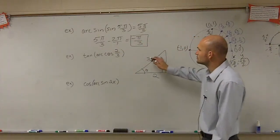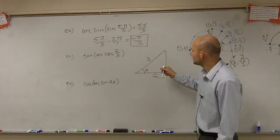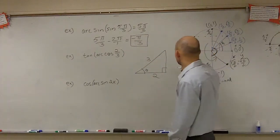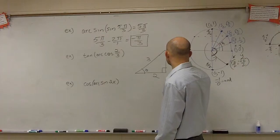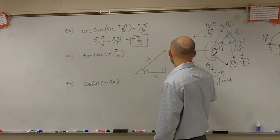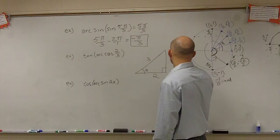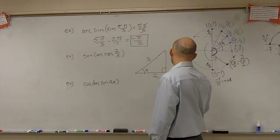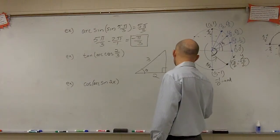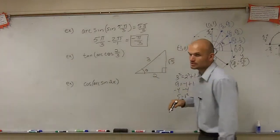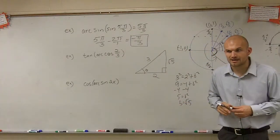So now I have two sides. I can use the Pythagorean theorem to find my opposite side. I say 3 squared equals 2 squared plus b squared. Therefore, b is going to equal the square root of 5.